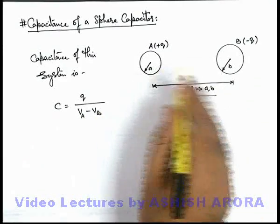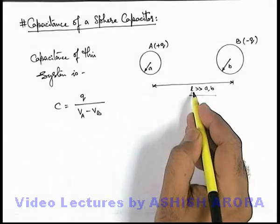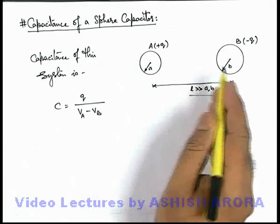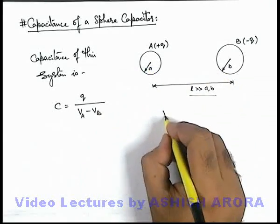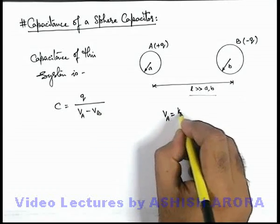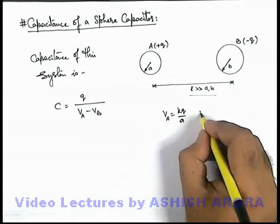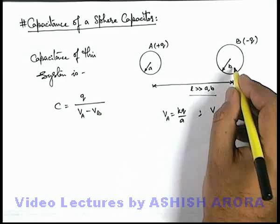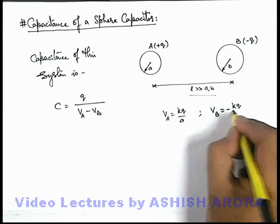In this situation, as the two spheres are far apart, charge of one sphere will not affect the potential of the other. So the potential at A can be written as kq/a, and potential at sphere B can be written as -kq/b.